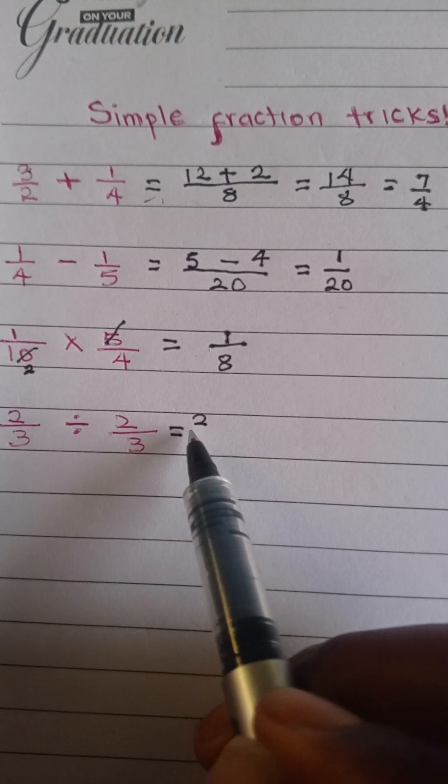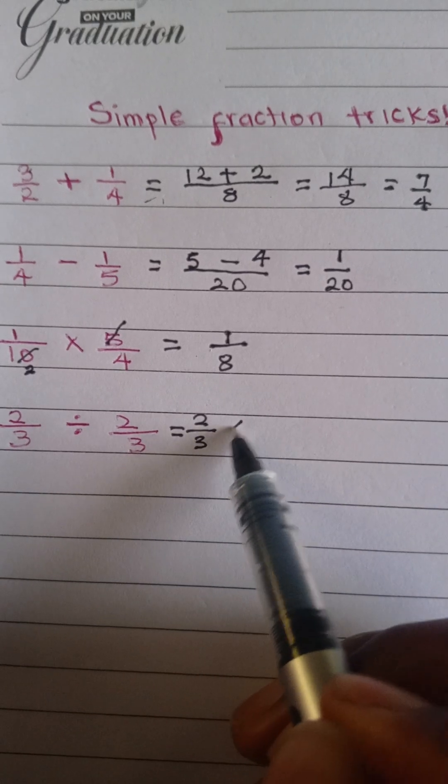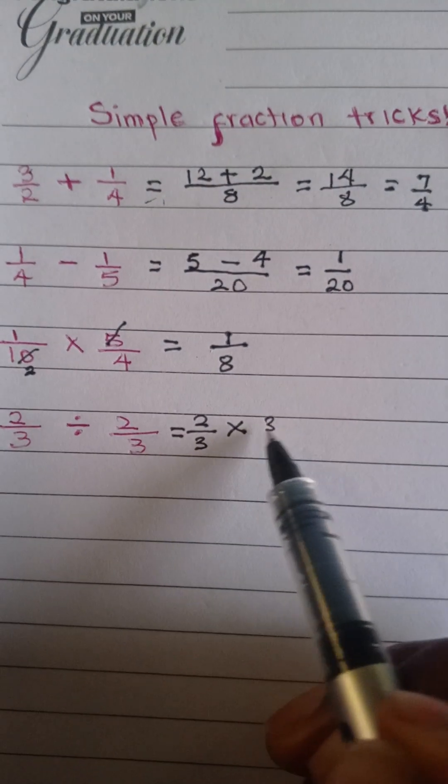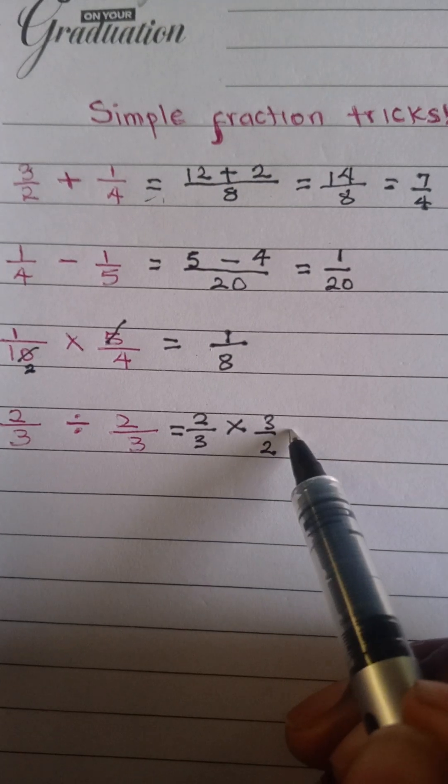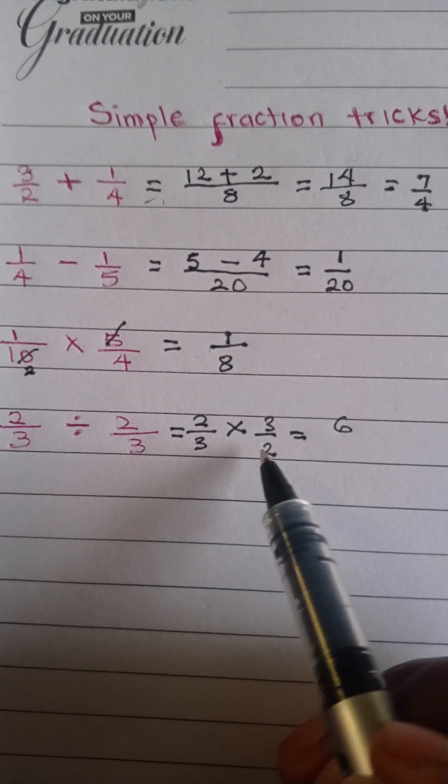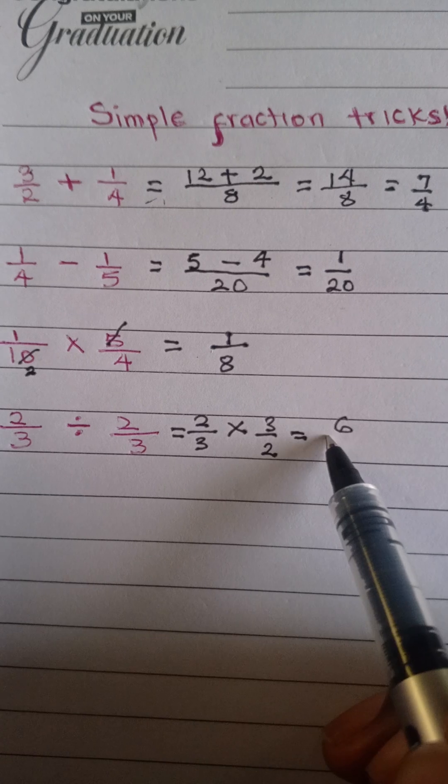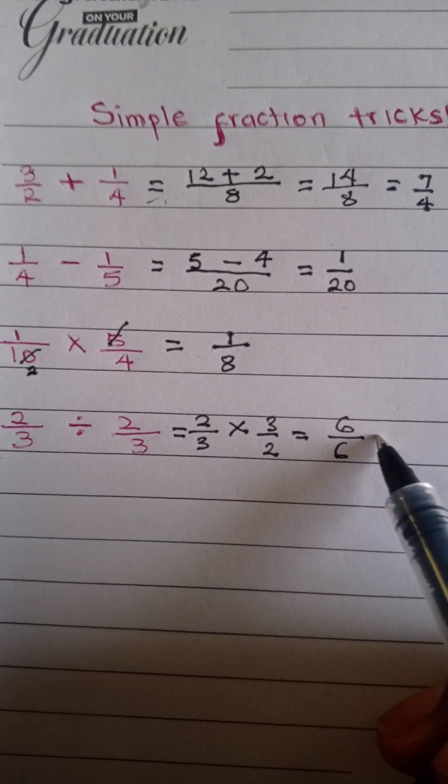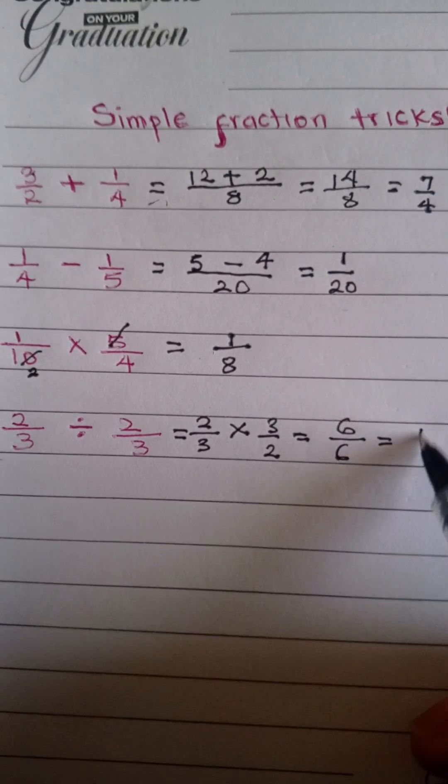So it's going to be 2 over 3 times 3 over 2, which should be equal to 2 times 3 is 6. 3 times 2 is 6. Ultimately, 6 divided by 6 will give you 1.